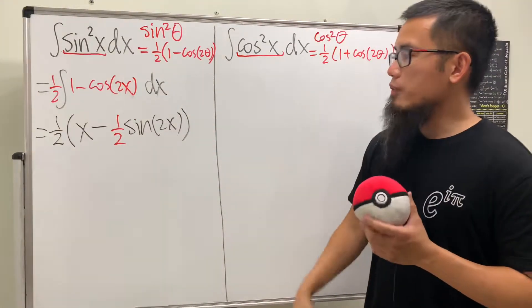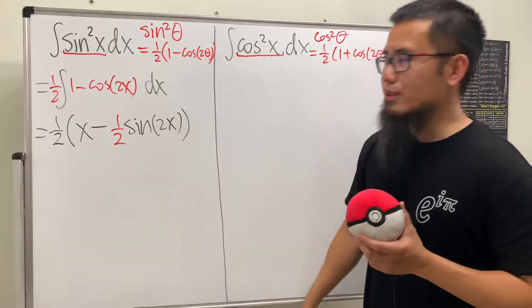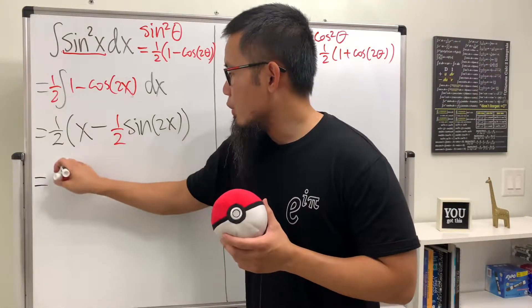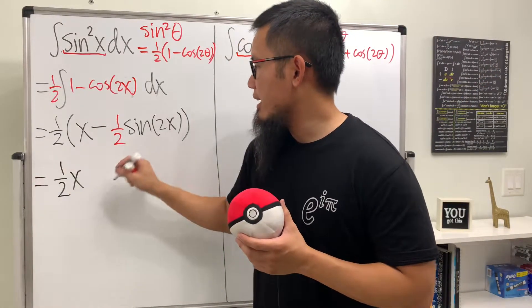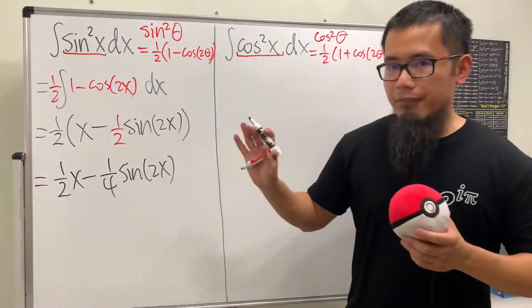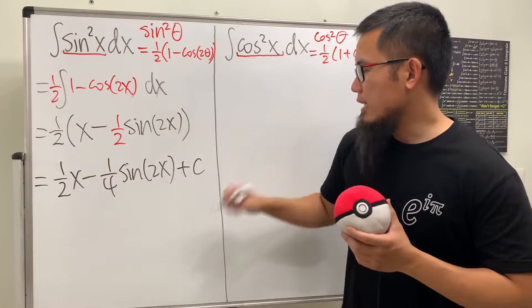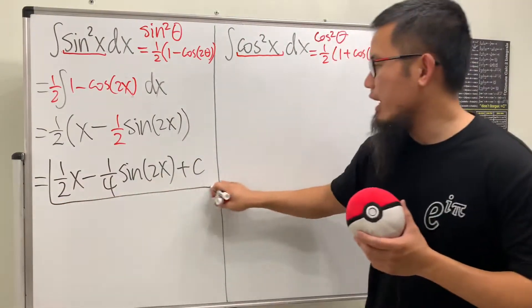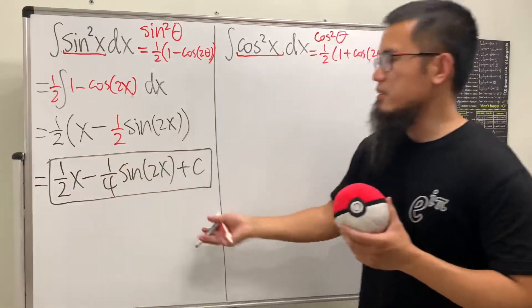And that's pretty much it. And of course, we can just multiply this out. So finally, we can see that 1 half x, and then minus 1 over 4, and then we have sine of 2x. And finally, this is the place I will put a plus c, just at the very end, when I am presenting the answer. Just like that.